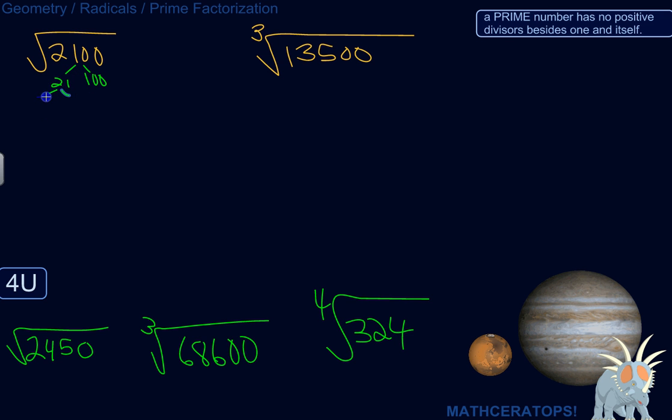21 is 3 times 7. 3 and 7 are both prime numbers. A prime number has no positive divisors besides 1 and itself. I can't divide 3 by anything except 3 and 1 and not get a remainder. Same thing with 7. So 100 is 10 times 10, and 10 is 2 times 5, and this 10 is also 2 times 5, and 2 and 5 are also prime numbers.